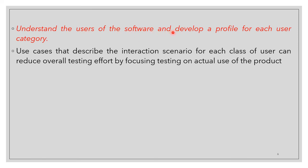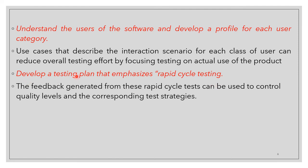Understand the users of the software and develop a profile for each user category, focusing testing on actual use of the product. Develop a testing plan that emphasizes rapid cycle testing. The feedback generated from the rapid cycle test can be used to control quality levels and the corresponding test strategies.